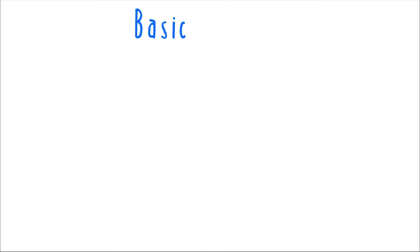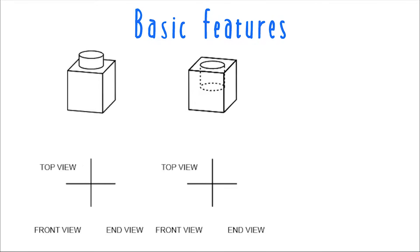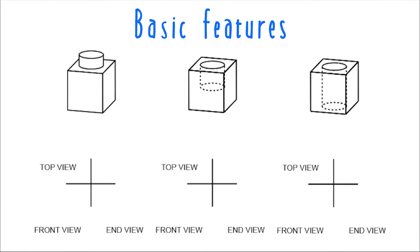Before we get into the problems, let's do a brief overview of what these kinds of features look like in the different views. Say you have an object like this, and another object like this. If you're given just the top view of each of these objects, you'd never know whether this main circular feature was a cutout into the object or something protruding out of the object.